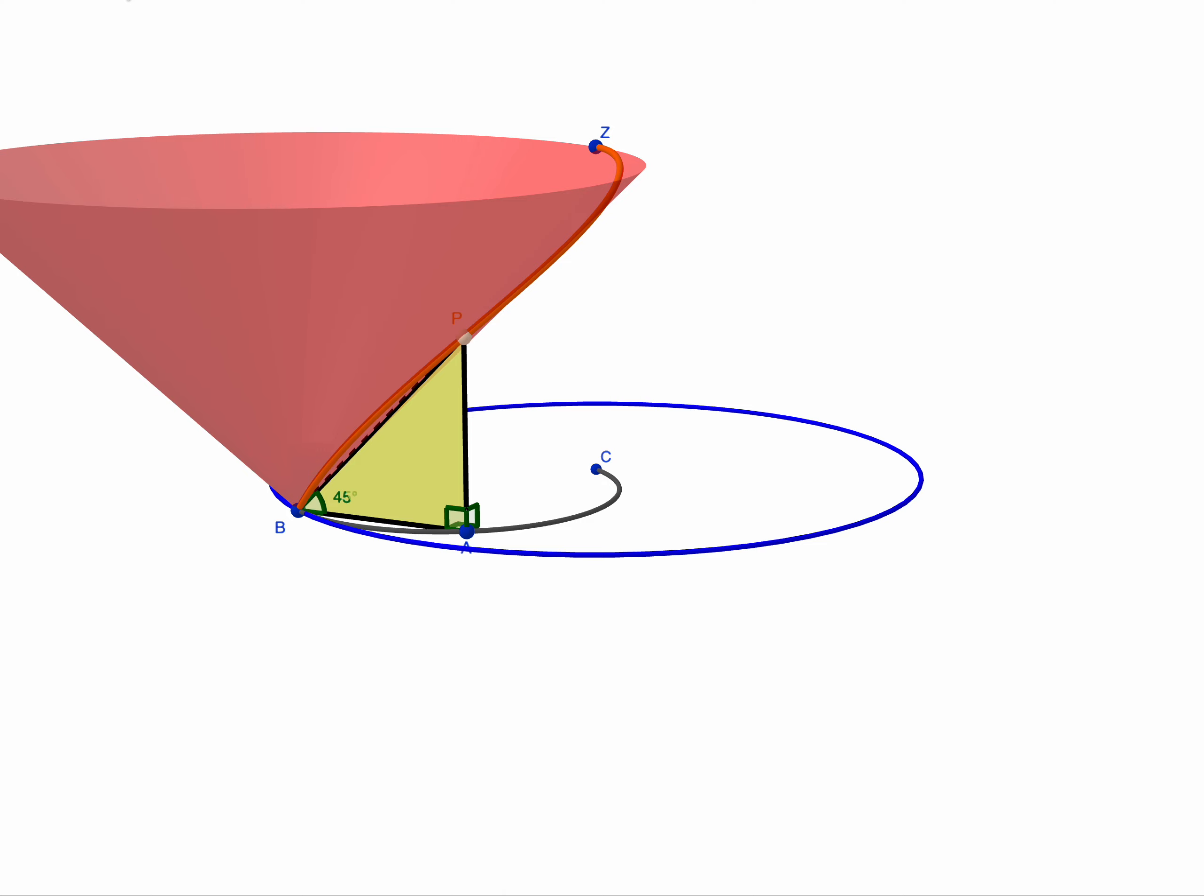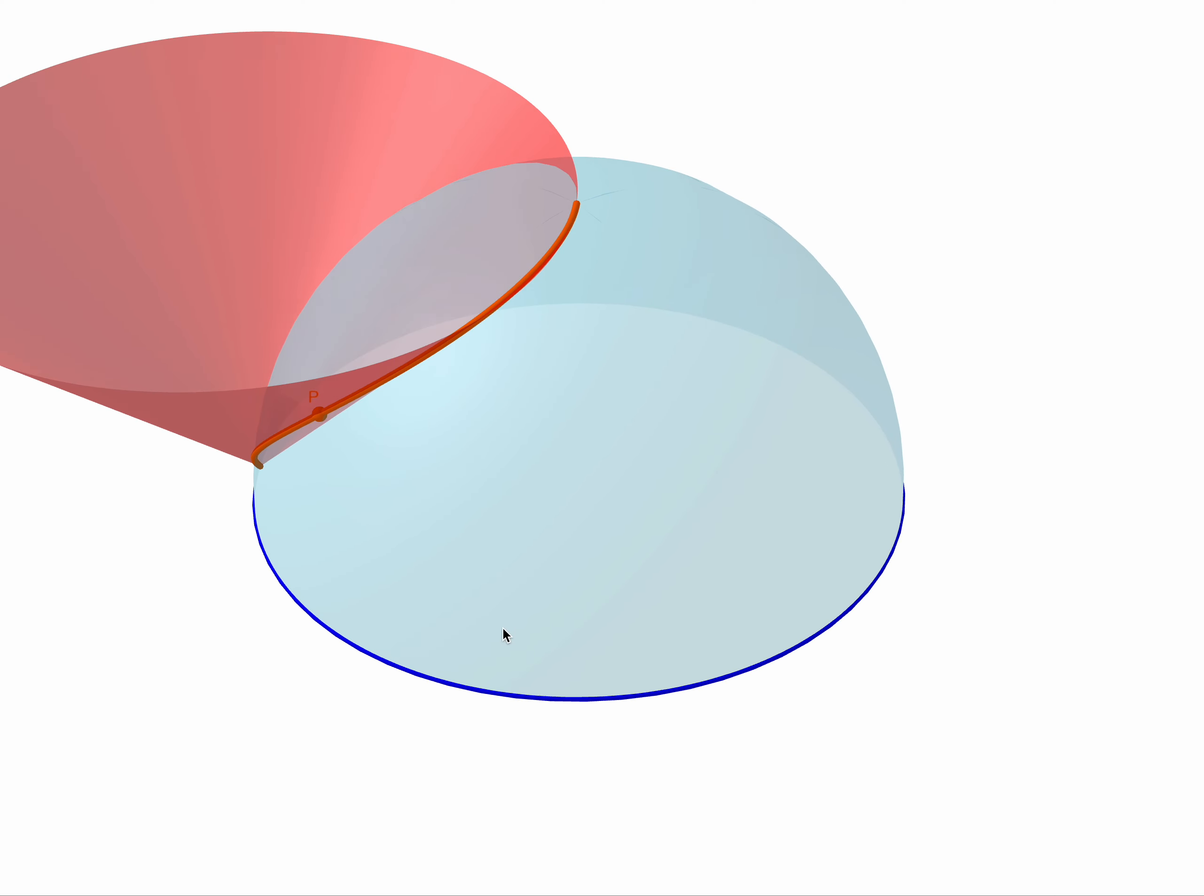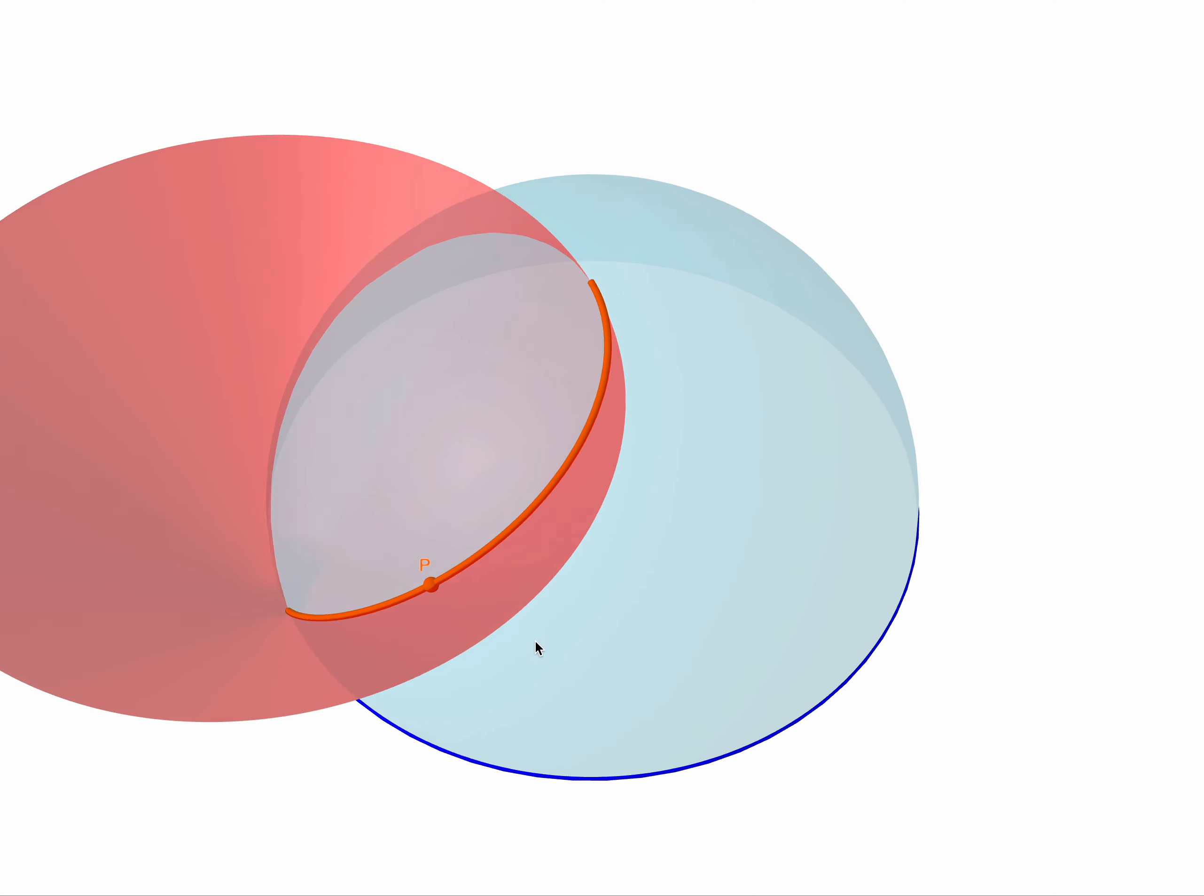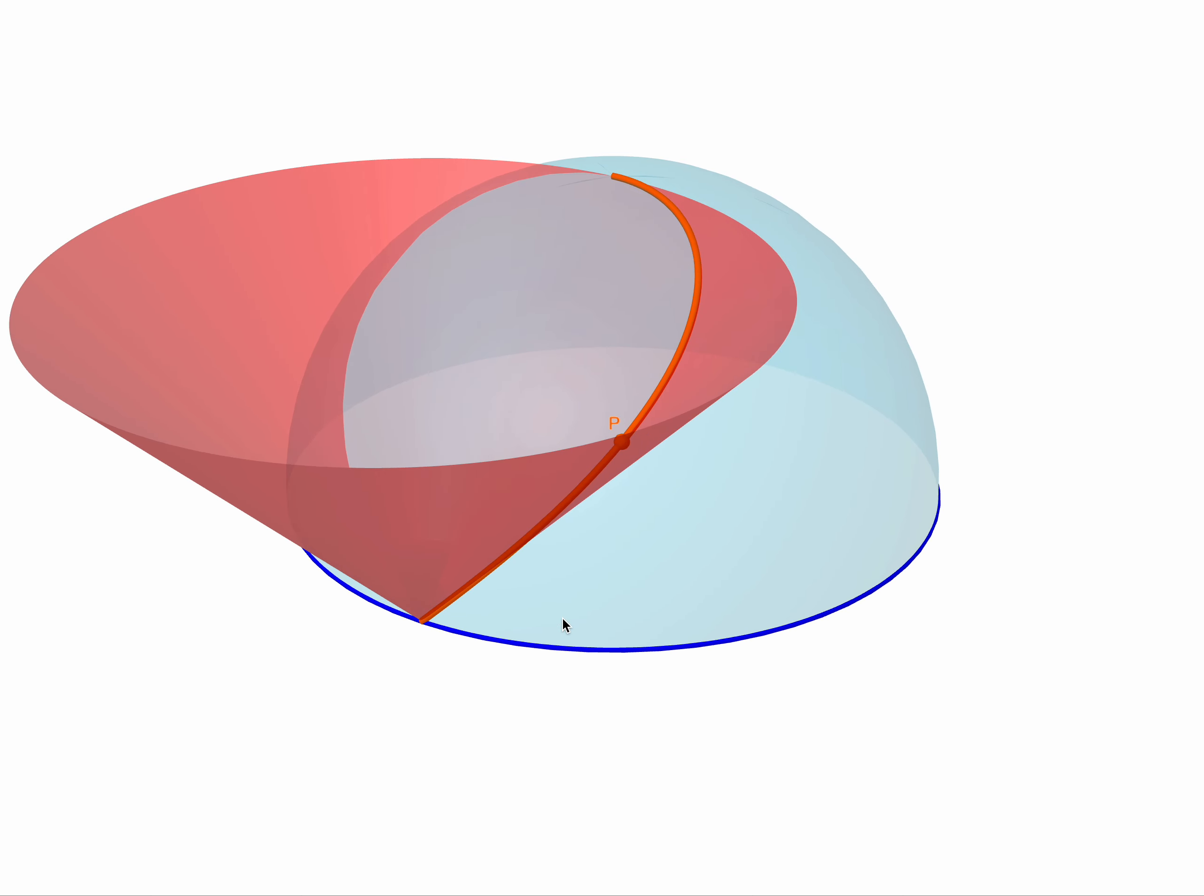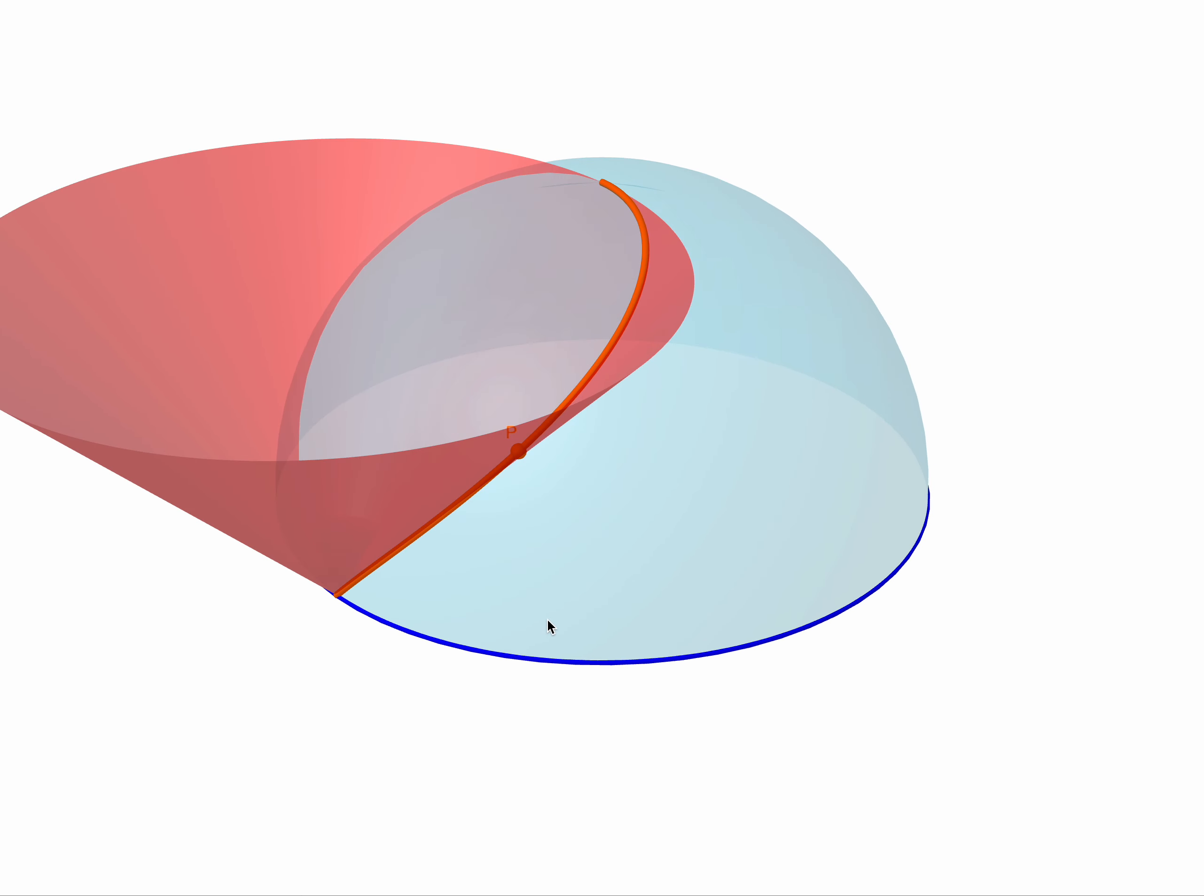Now, this means that that curve is totally contained within the surface of that cone, which is brilliant. What we can do is go back to looking at the original curve. And you can see I've got the sphere there, and it lies completely within the surface. The curve lies completely within the surface of that cone.